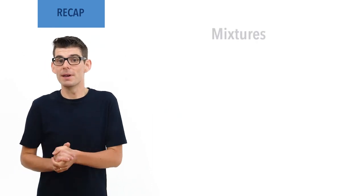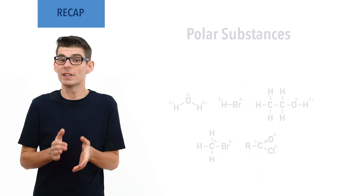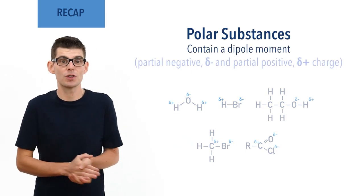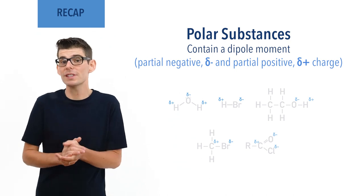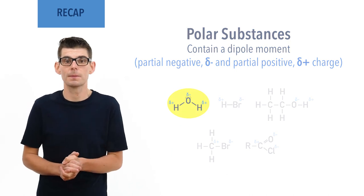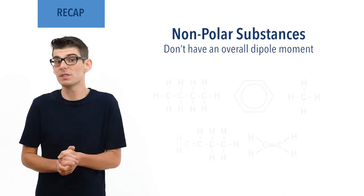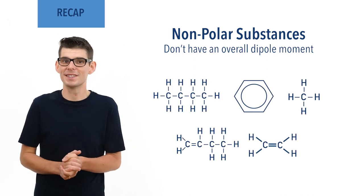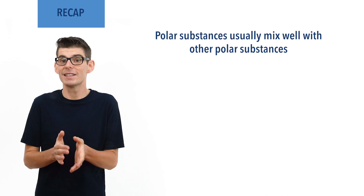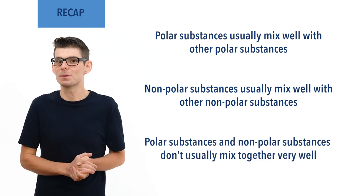Before we talk in detail about chromatography, there are a few essential ideas you need to be comfortable with. Mixtures are made up of two or more different substances that aren't chemically joined together. Polar substances contain dipoles — regions of partial negative and partial positive charge — occurring due to differences in electronegativities between bonded atoms. Water is a common example. Nonpolar substances don't contain regions of partial charge; hydrocarbons in organic chemistry are common examples. Polar substances tend to mix well with other polar substances, and nonpolar substances tend to mix well with other nonpolar substances, but polar and nonpolar substances don't usually mix well with each other.